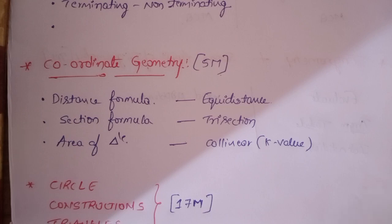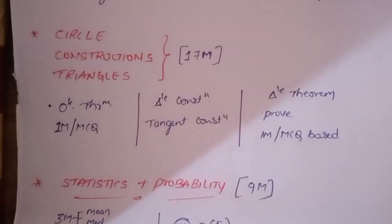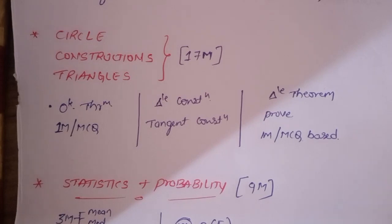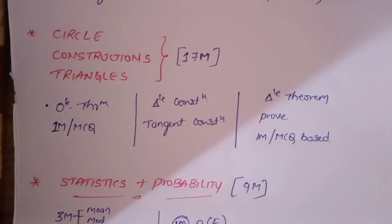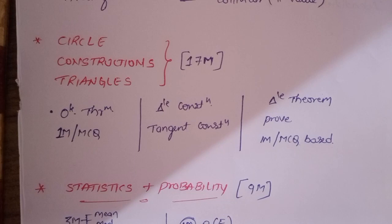Next, circles, constructions, triangles is the easiest part in the question paper. These three parts together have 17 marks. First in circle, almost everyone is familiar with circle theorems. Circle theorems and one multiple choice question. Depending on tangent theorem or tangent triangles values, one multiple choice one mark question.